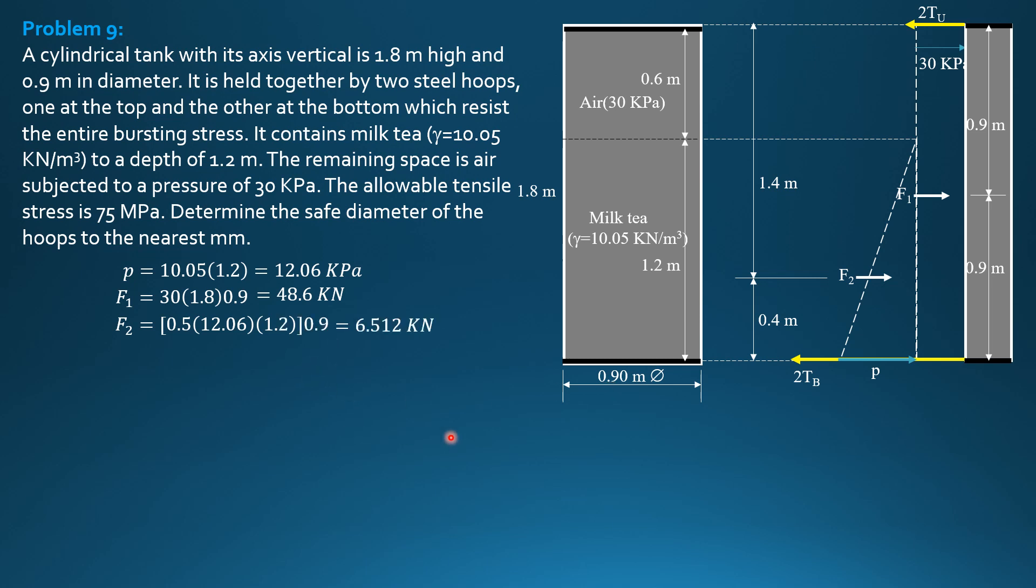Summation of moments about the bottom hoop equals zero. So 2 times T sub U times 1.8 equals F1, 48.6 times 0.9 plus F2, 6.512 times 0.4. Solving for T sub U, 12.87 kilonewtons. Then let's convert this to newtons times 1000, then equate to allowable tensile stress of the hoop times area pi over 4 diameter of the upper hoop squared.